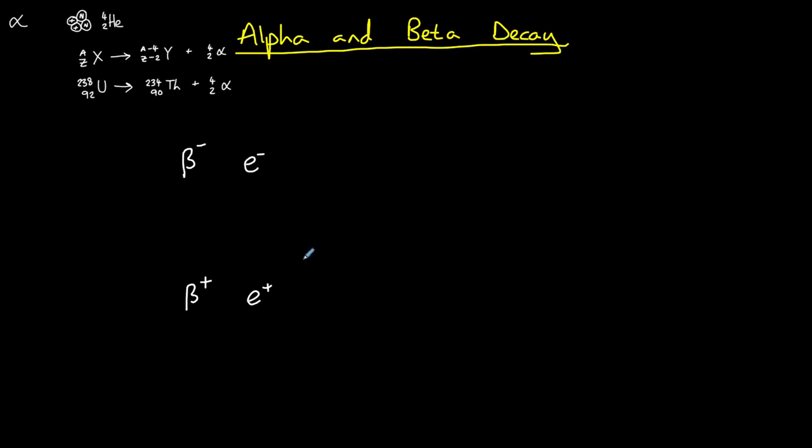In beta negative decay, a neutron turns into a proton, and this produces two particles: an electron and an anti-neutrino. I'll explain more about neutrinos and anti-neutrinos later in this video. Because a neutron has turned into a proton, the proton number will increase by one, while the nucleon number stays the same.